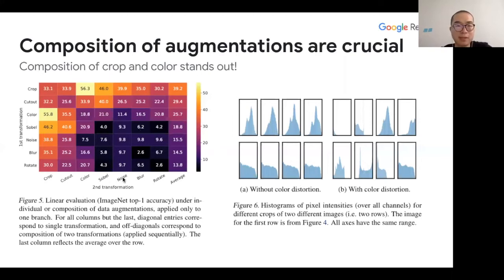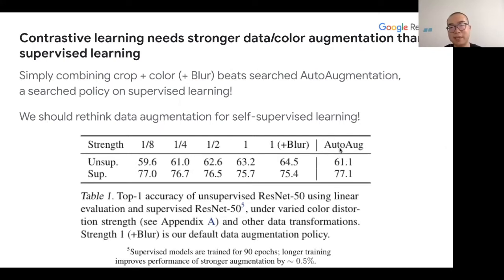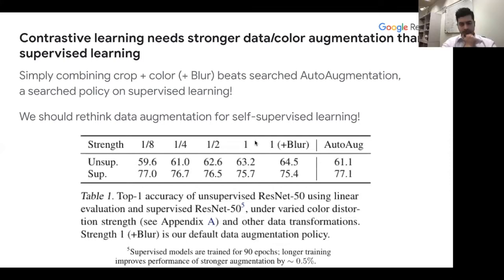These two — random crop and color distortion — are the most important augmentations. We also find that increasing the strength of color distortion helps unsupervised contrastive learning a lot, but doesn't help supervised learning as much. Before SimCLR, some methods like AMDIM applied auto-augment policies. But with just random crop and strong color jitter, you already surpass all auto-augmented policies. The basic reason for strong color distortion is to avoid shortcuts.